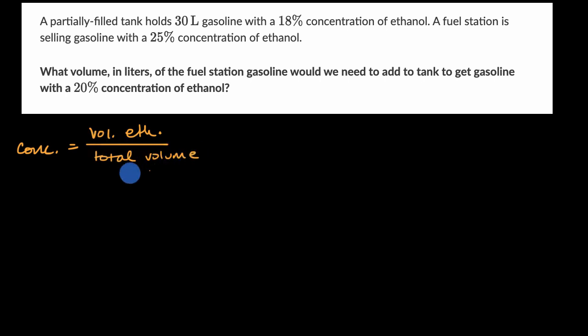Now this is already interesting because this first sentence tells us a lot. It tells us our concentration, it tells us our total volume. And so if we know two parts of this, in theory we could figure out the third part. Let's try that out. We know we're dealing with an 18% concentration. That's going to be equal to, they haven't told us our volume of ingredient, we just know that the ingredient is ethanol, volume of ethanol over the total volume they have told us, 30 liters.